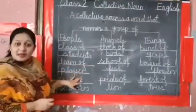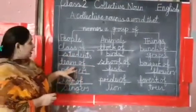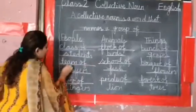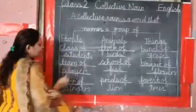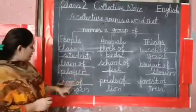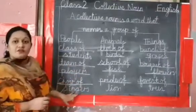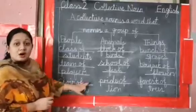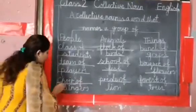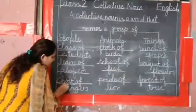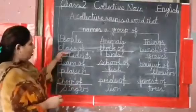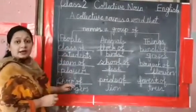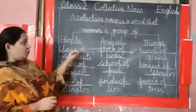Team of players. Team of players. Here, team is a collective noun. Choir of singers. Choir of singers. Here, choir is a collective noun. So class, team, choir are collective nouns.